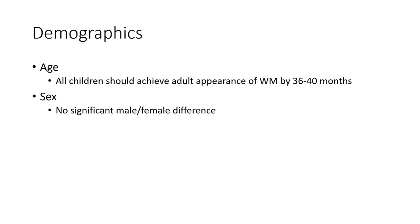Demographic age: all children should achieve adult myelination by 36 to 40 months, with no significant male and female difference.